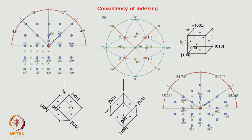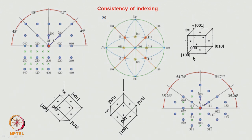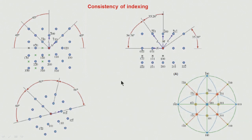Not only can we logically argue which reflections will appear — using the stereographic projection we can easily index the pattern consistently. If the tilt is done clockwise by 45 degrees, the beam direction becomes 01̄1, and the indexing of the pattern will change accordingly. That is the way indexing must be done.